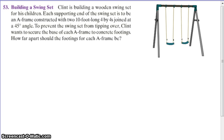Hopefully that gives you an idea of what kind of an A-frame swing set we're talking about. It says here, Clint's building a wooden swing set for his children. Each supporting end of the swing set is to be an A-frame constructed with two 10-foot long 4x4s joined at a 45-degree angle.